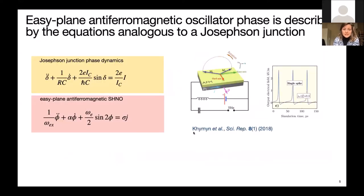So recently, it has been shown in this beautiful work that easy plane anti-ferromagnetic spin hole nano-oscillators, at least in theory, could reproduce this same dynamics, where here you see that the precession phase phi is described by the same differential equation, where the exchange coupling plays the role of the capacitance, the damping plays the role of the resistance, and easy axis anisotropy plays the role of the critical current.